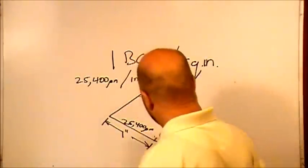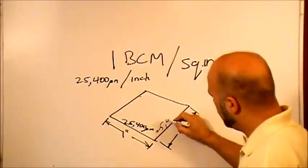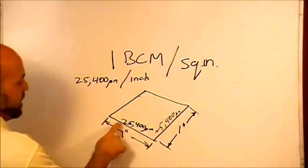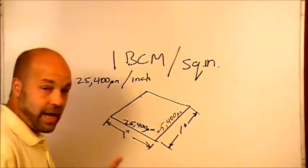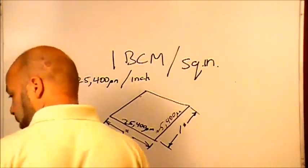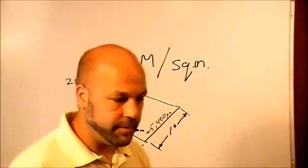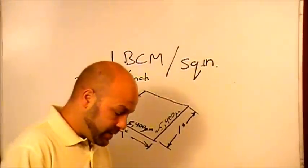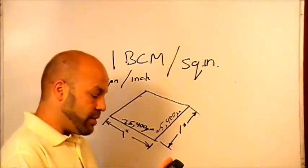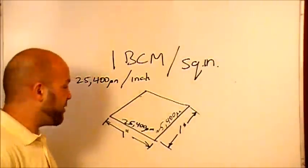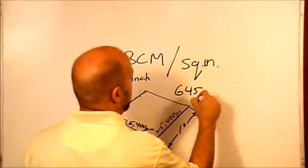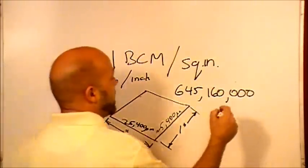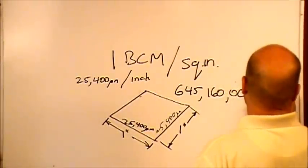So therefore, if we have 25,400 in this direction and 25,400 in this direction, taking one inch by one inch being 25,400 microns and 25,400 microns, and we do the math on my calculator. So 25,400 squared equals 645 million, 160,000 square microns.